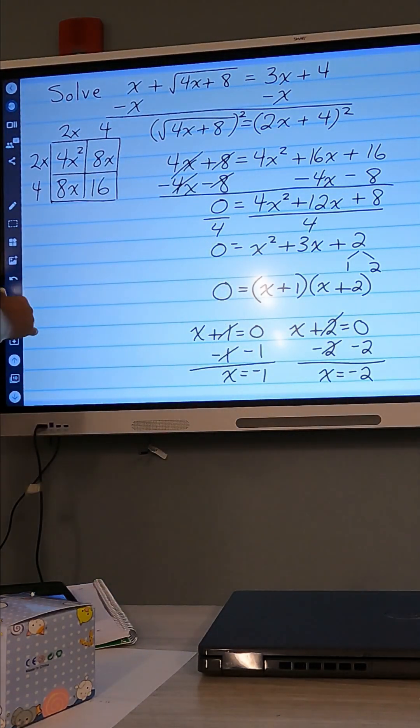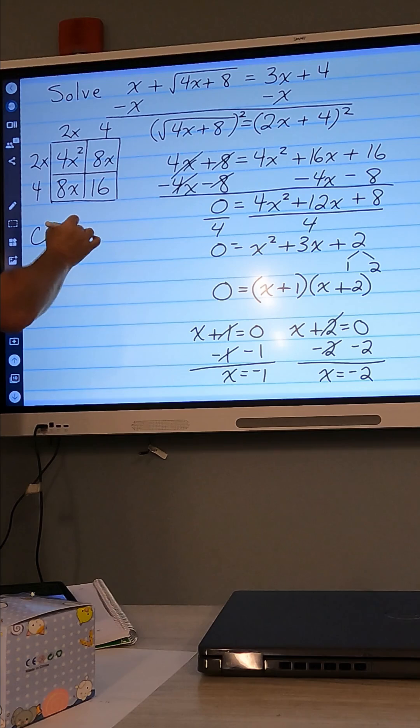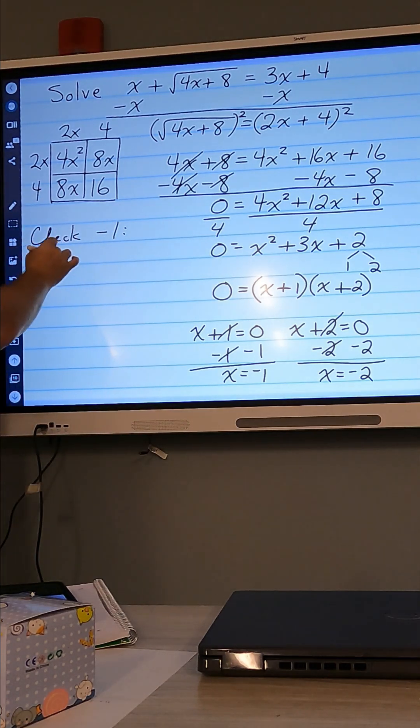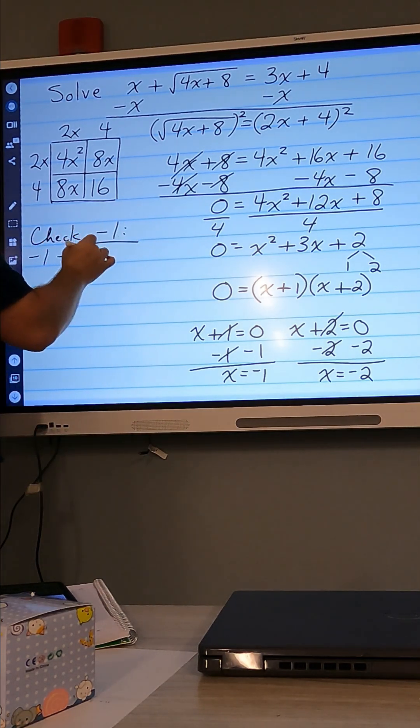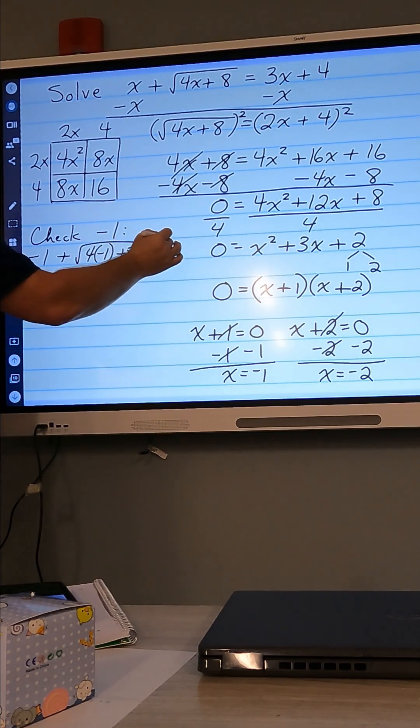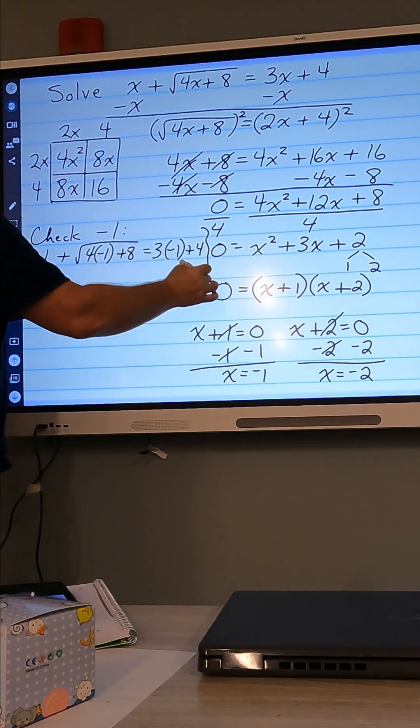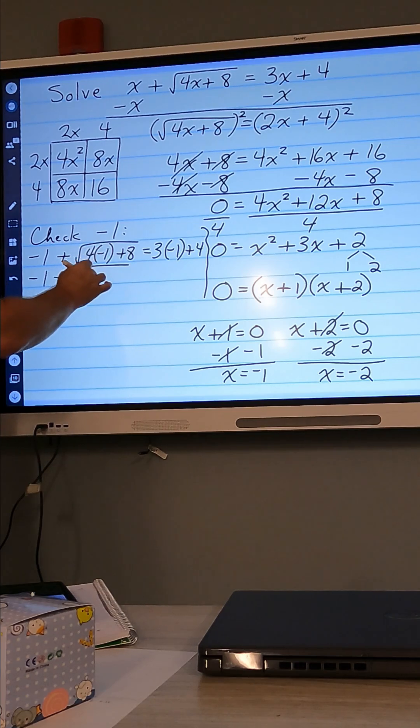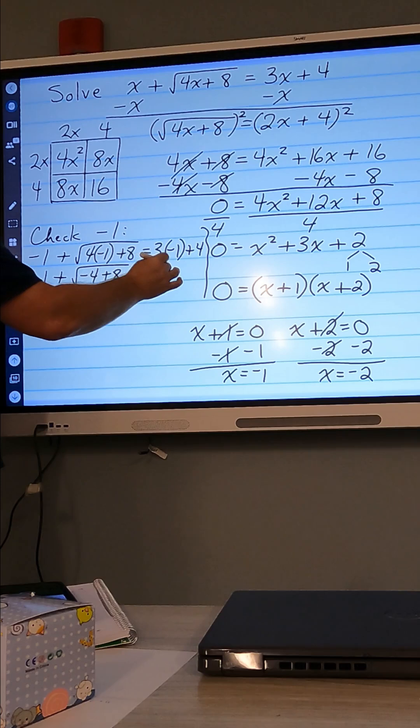I want to check both solutions, so let's check first negative 1. So everywhere there's an x here, I'm going to put negative 1. Negative 1 plus square root of 4 times negative 1 plus 8. Does that equal 3 times negative 1 plus 4? So we have negative 1 plus 4 times negative 1 is negative 4. So negative 4 plus 8, and 3 times negative 1 is negative 3 plus 4.